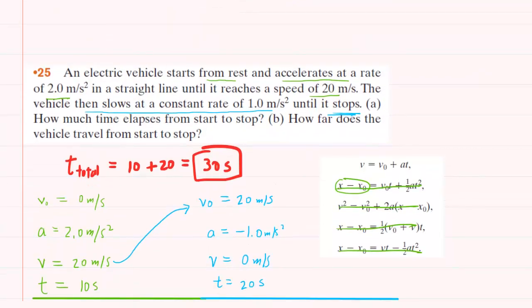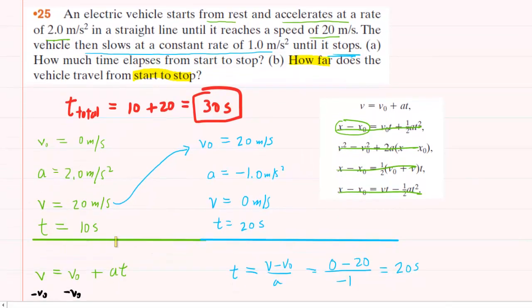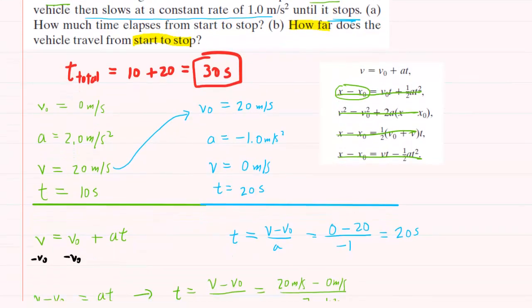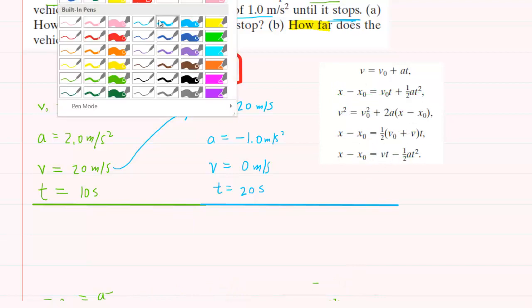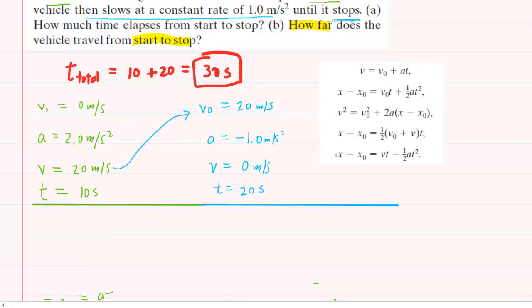For part B, we are asked to determine basically the displacement that the vehicle travels from start to stop. So what we're going to have to do is figure out the displacement for each section of the journey and then add those together to get the overall displacement. So why don't we clean up our workspace just a little bit here and then we're going to pick an equation from our list that would help us get the displacement. There would be more than one option at this point, but perhaps the easiest one to use will be this one right here.